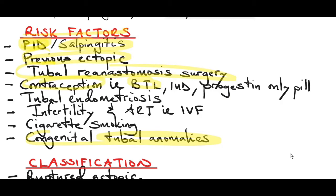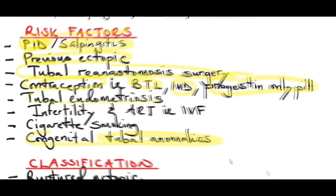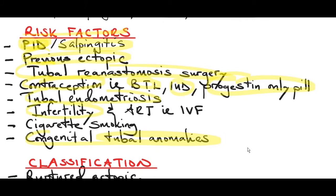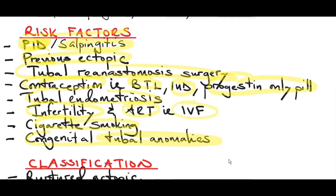Some contraceptive methods increase the risk of ectopic pregnancy, such as bilateral tubal ligation, which has a 1-3% failure rate. In patients with a failed BTL, one-third have an increased risk of ectopic pregnancy. Intrauterine devices prevent intrauterine and ectopic pregnancies, but should a patient conceive with an IUD in situ, the risk of ectopic pregnancy increases. Progestin-only pills are also associated with increased risk due to impaired tubal motility. Tubal endometriosis can obstruct the tube. Infertility is associated with ectopic pregnancy, likely because of underlying tubal disease. Assisted reproductive techniques like IVF also increase the risk. Cigarette smoking causes hypoxia and damage to cilia in the fallopian tube.